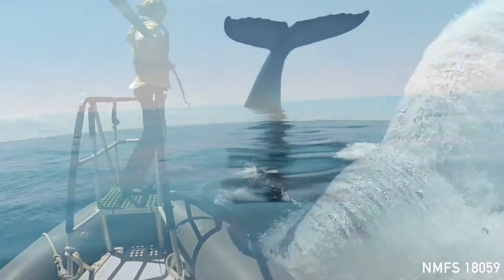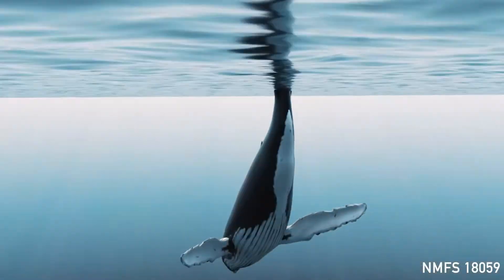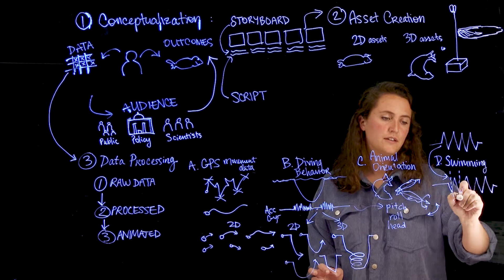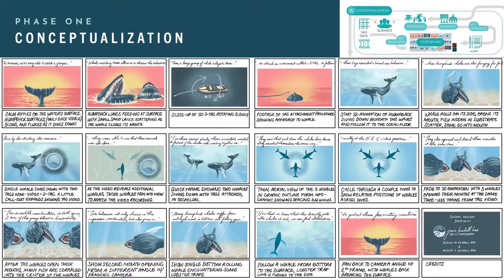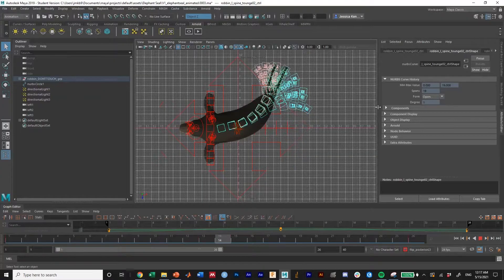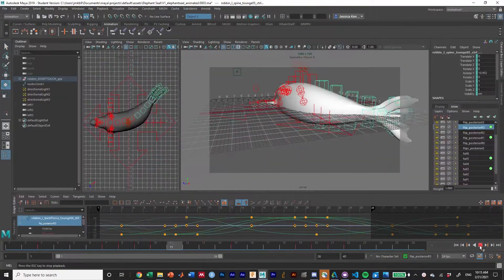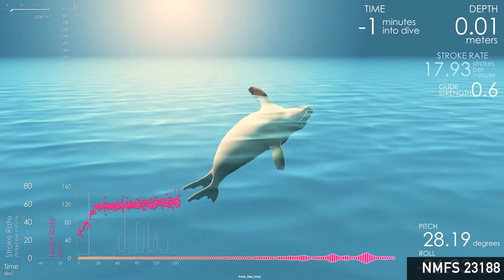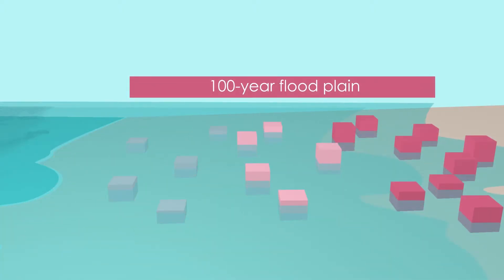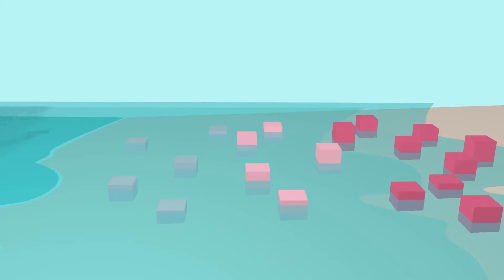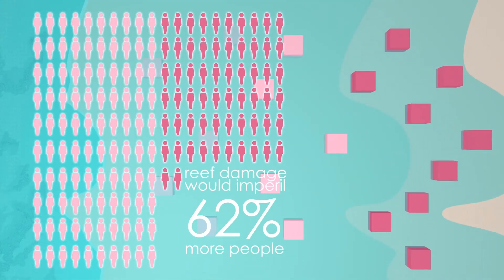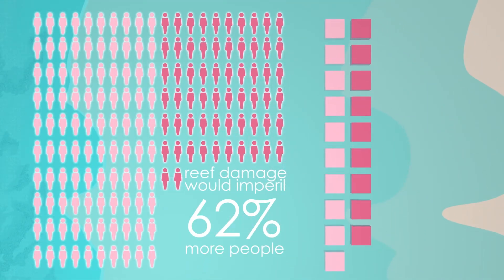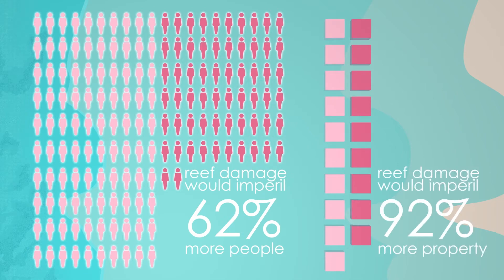You'll learn how to distill scientific complexity, how to interpret and manipulate data, and how to bring your data to life using motion graphics and animation. You'll write a science writing script, create custom graphics and data visualizations, and learn to create data-driven animations in both 2D and 3D.